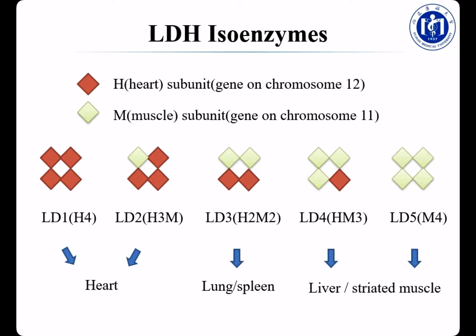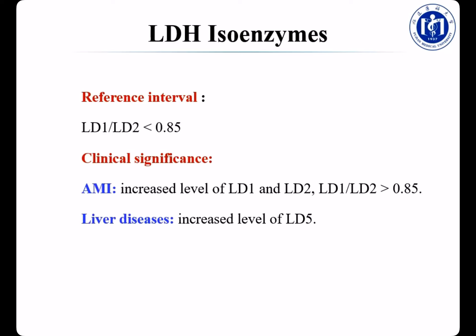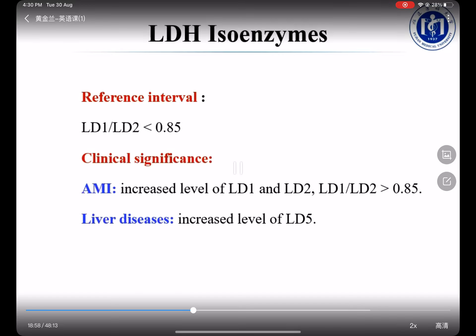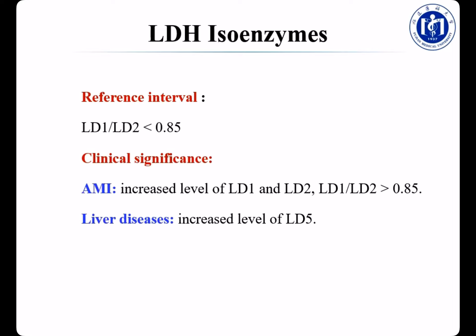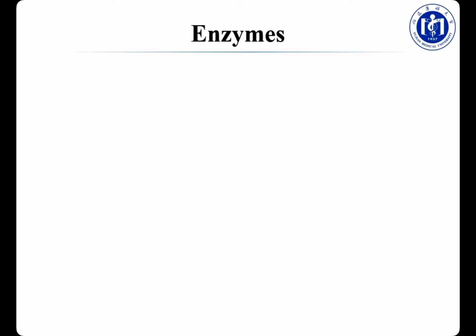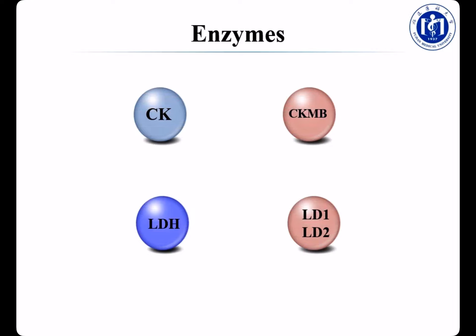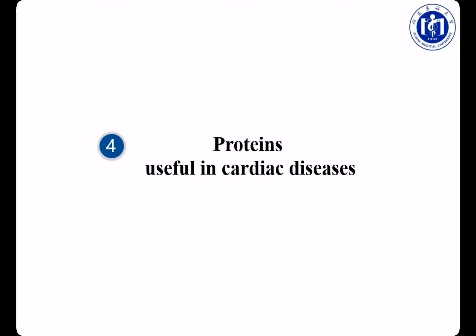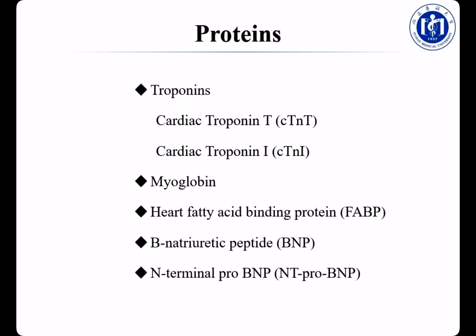LDH is a tetramer of H and M subunits, enabling five possible isoenzymes. LD1 consists of 4H subunits; LD2 consists of 3H and 1M. Both LD1 and LD2 are mainly expressed in the heart. LD3 contains 2H and 2M subunits and is frequently expressed in the lung and spleen. LD4 consists of 1H and 3M subunits. LD5 has 4M subunits; LD4 and LD5 are mostly found in liver and striated muscles. The most specific isoenzymes for cardiac disease are LD1 and LD2. Clinically, we use the LD1/LD2 ratio to help diagnose cardiac diseases; the reference interval is less than 0.85, but in AMI patients the ratio is always over 0.85.